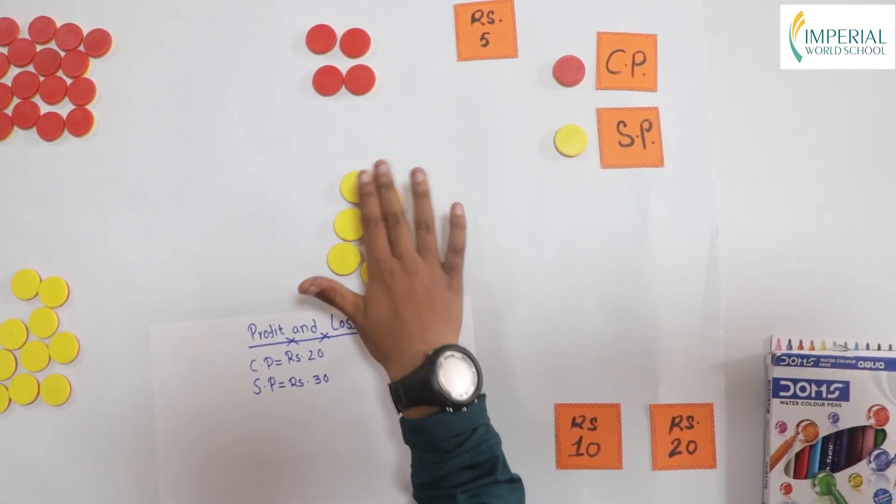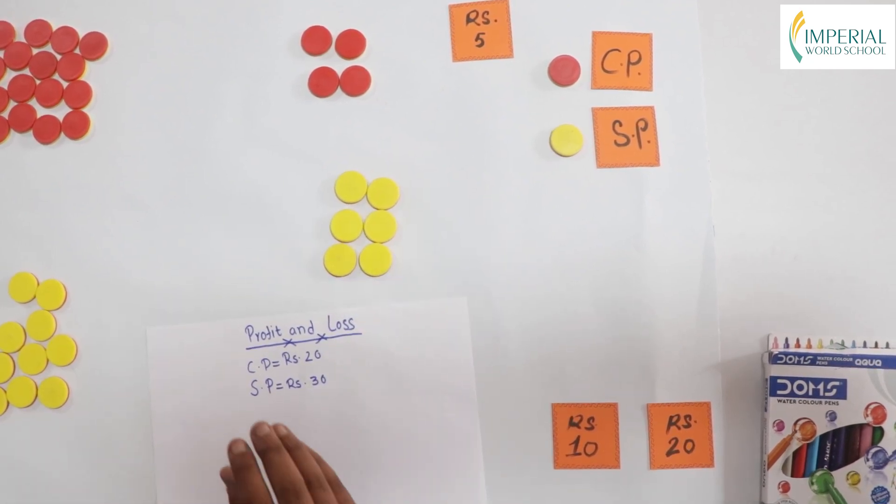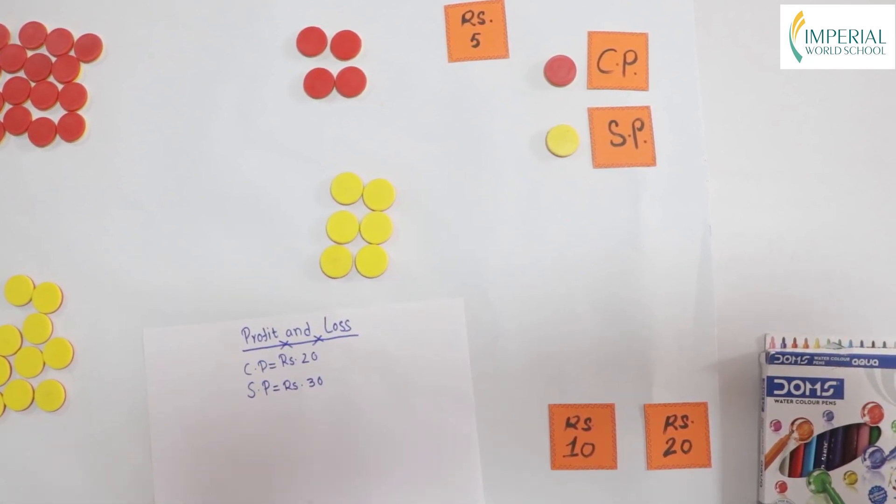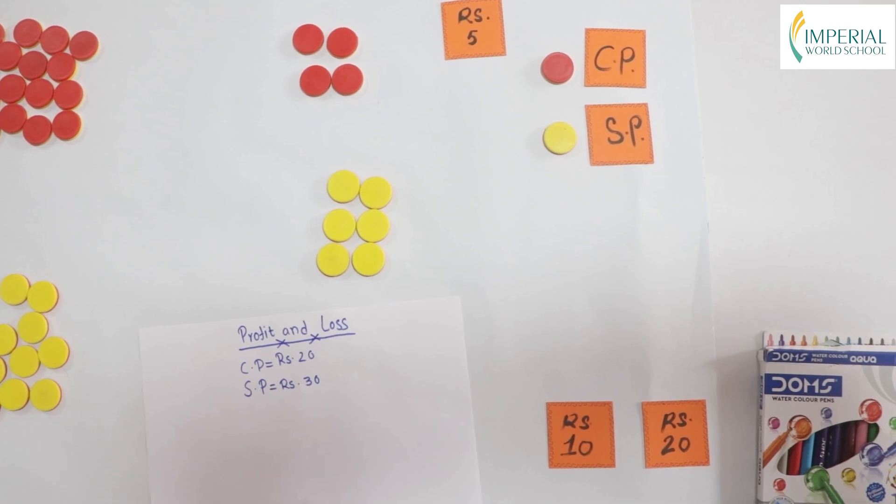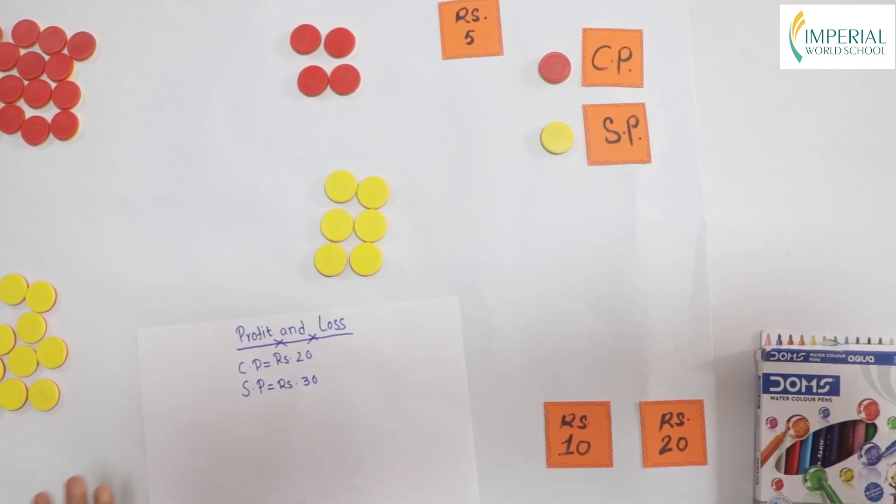Now, since we have 6 tiles for selling price and 4 tiles for cost price, we know we have profit since our selling price is greater than our cost price.